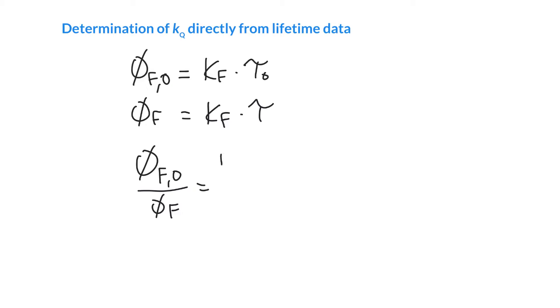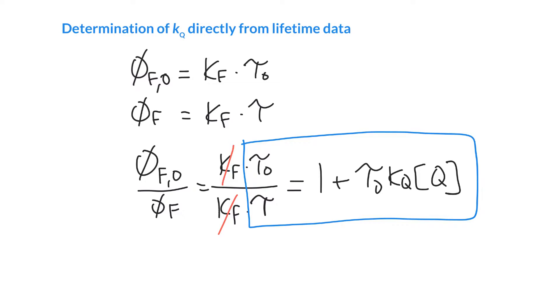We can show that's equal to kf times τ0 over kf times τ. Those kf's exactly cancel out. The Stern-Volmer equation we had before was one plus τ0 times by that quencher rate constant times by that concentration of quencher. So we've got an expression here now and we can rearrange this.